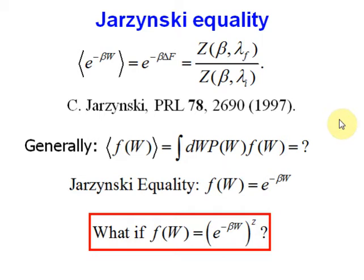From the non-equilibrium work measurement, we can calculate the expectation values of p(w) with respect to any function f(w). The Jarzynski Equality is only a special case of this, taking f(w) equal to the exponential minus beta*w. Here we are motivated and we ask the question: what occurs if we take f(w) equal to the exponential minus beta*w to the power of z, which differs a little from the Jarzynski Equality. Here z is a free parameter; for z equal to 1, it recovers the Jarzynski Equality case. Note that beta here is not a free parameter — it is fixed and is the temperature of the initial equilibrium state.